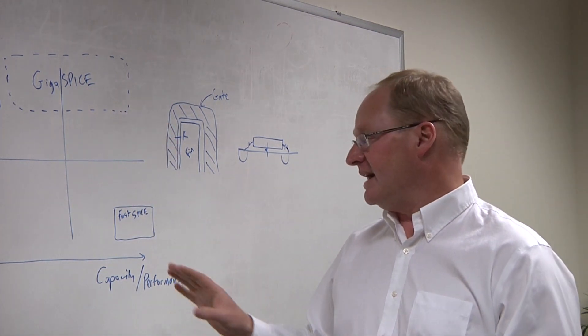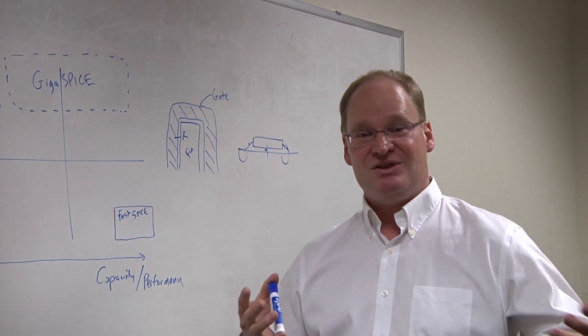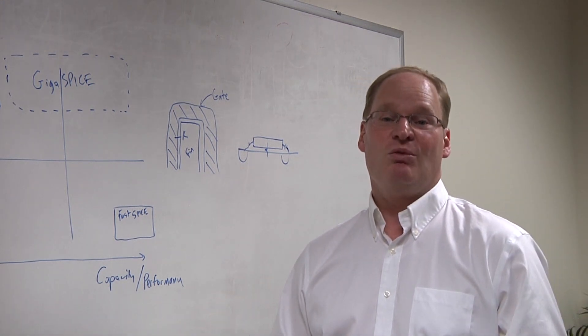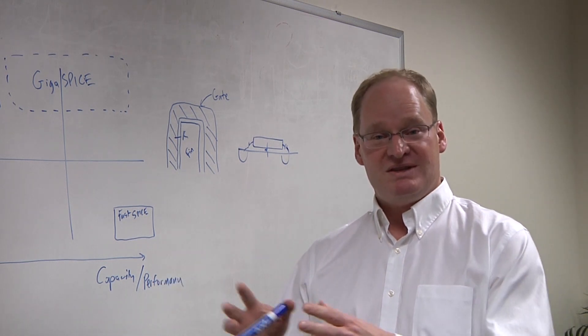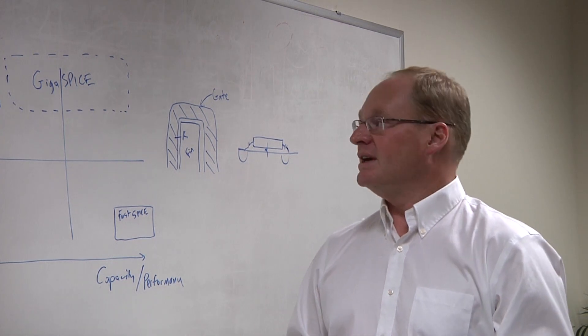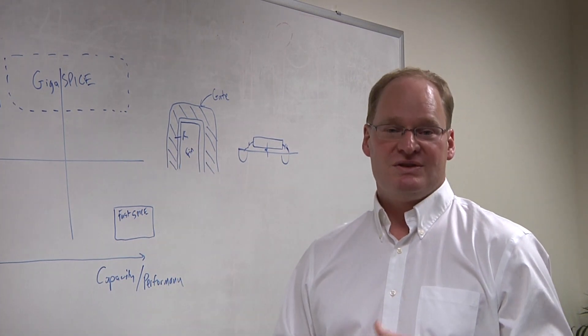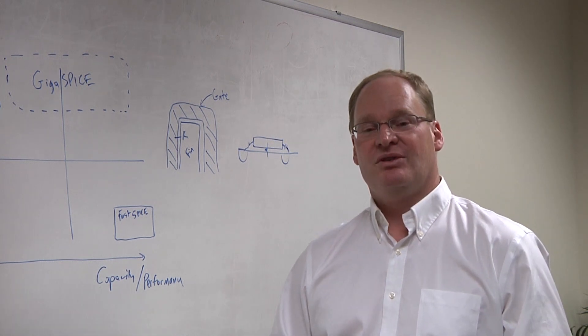And another reason for that is in the FastSpice, traditionally, you build table models of devices. But if every device is unique or different, those tables don't work very well. So you need to bypass the tables and just use the BSIM models directly to get the accuracy that you need for yield prediction. And Gigaspice uses the transistor models natively rather than trying to build tables.